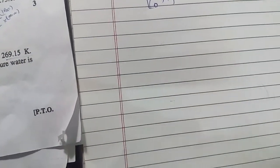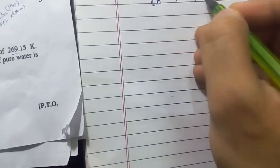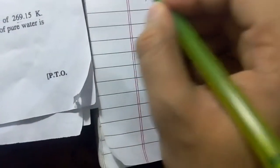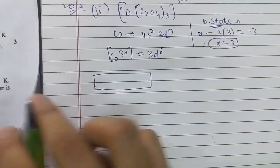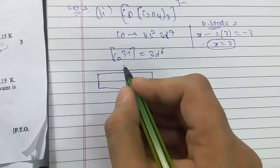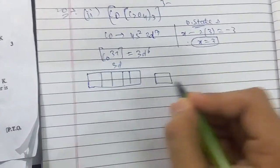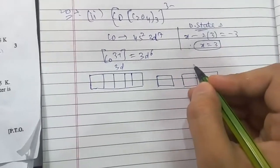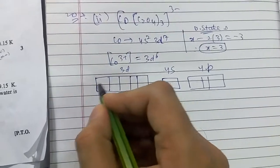So Co3+ exists as 3d6. If I draw this: this is 3d with 1, 2, 3, 4, 5 orbitals, and this is 4s. So it's 3d6: 1, 2, 3, 4, 5, 6 electrons.